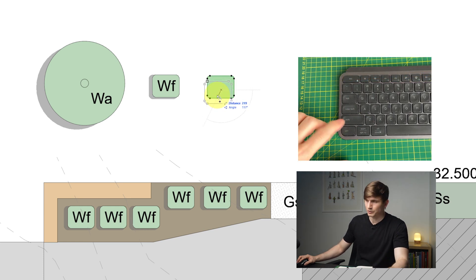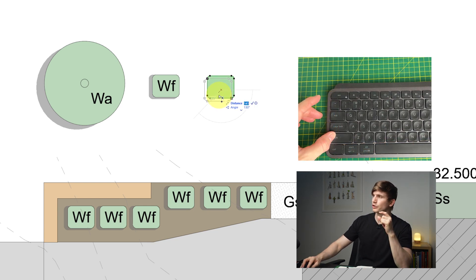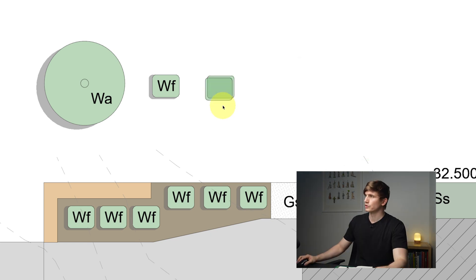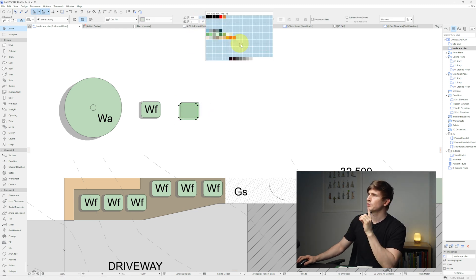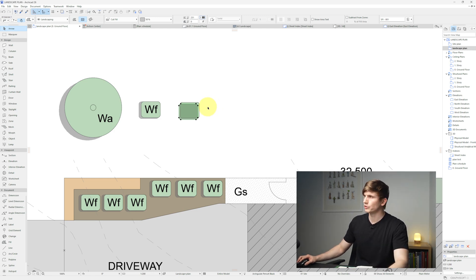Tap Ctrl once to create a duplicate, then holding Shift at a 45-degree angle, type in a distance of 100mm. This gives a second fill. Select this second fill, turn off the solid edge, and this time select a gray. This is currently covering our other fill.